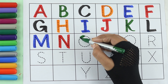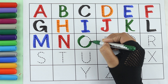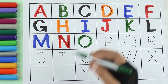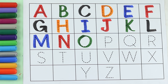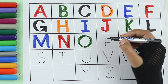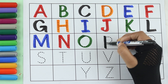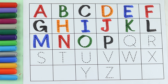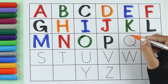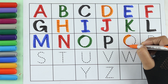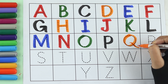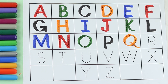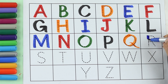Green color. O. O for orange. Black color. P. P for pan. Orange color. Q. Q for queen.